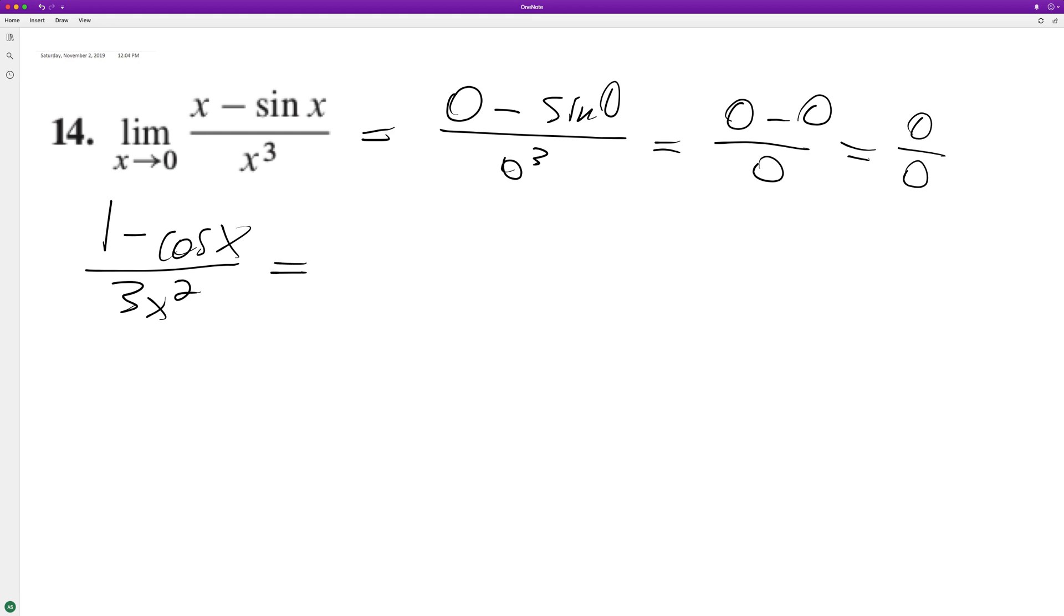We can try plugging it in again. We get 1 minus cosine of 0 is 1, over 3 times 0 squared. So we get 0 over 0. So that doesn't work.